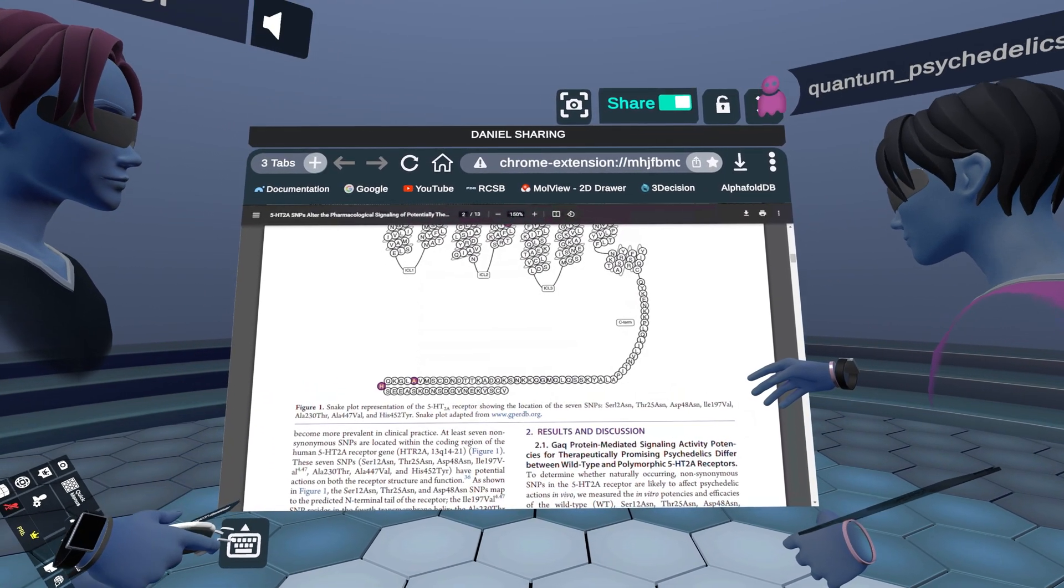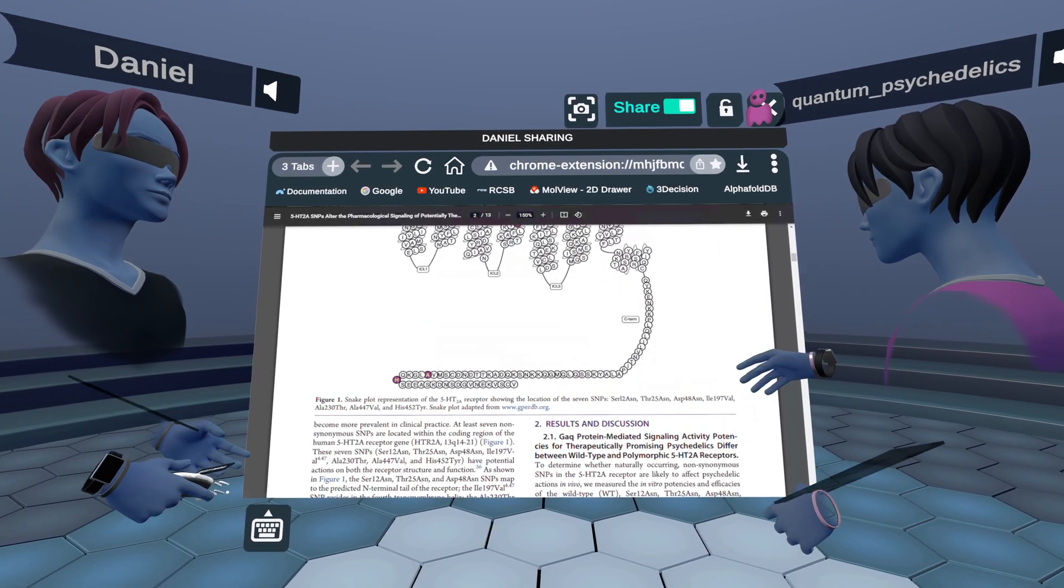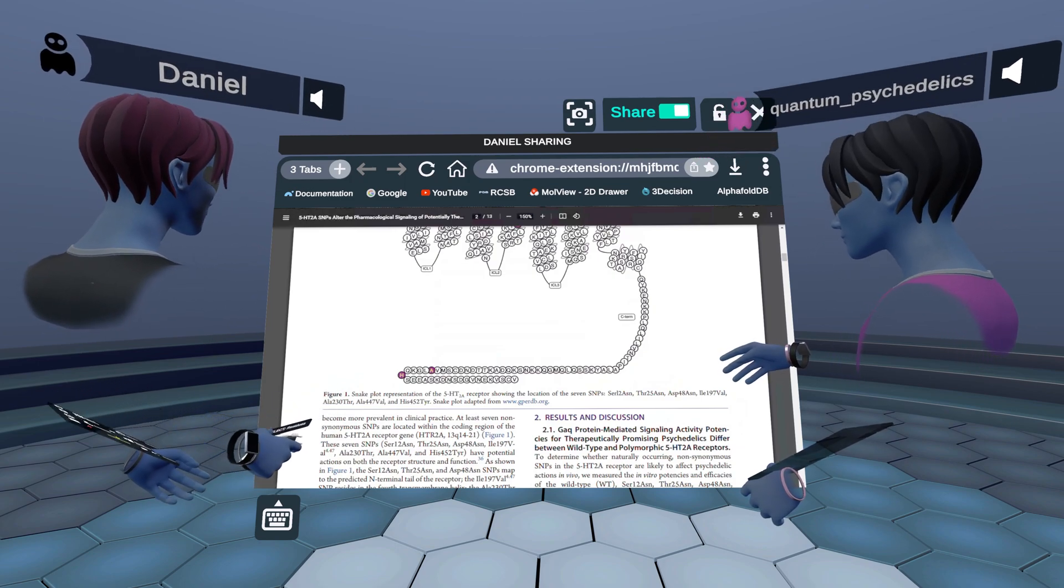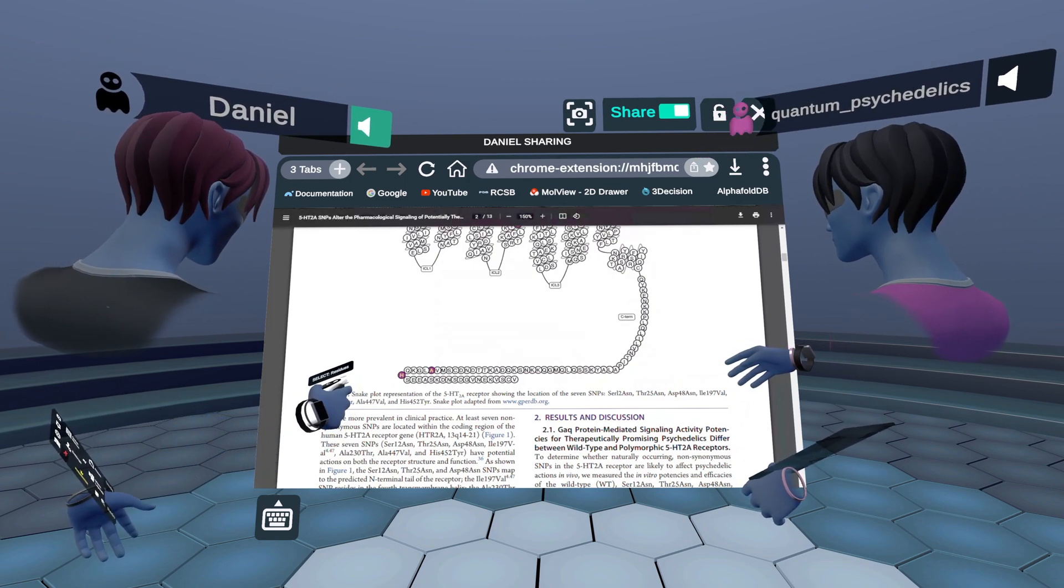which couples with downstream signaling proteins, right? Such as beta-arrestin and G-protein. So, what's interesting here, Asher? Can you comment on that?